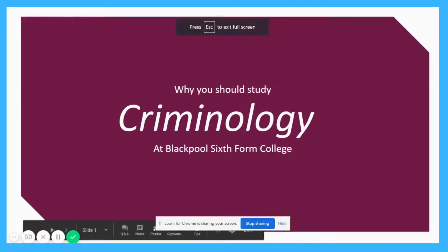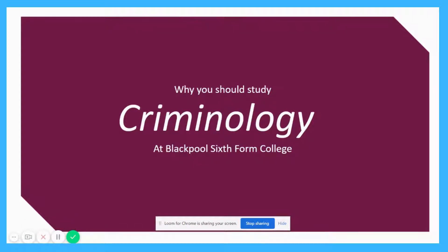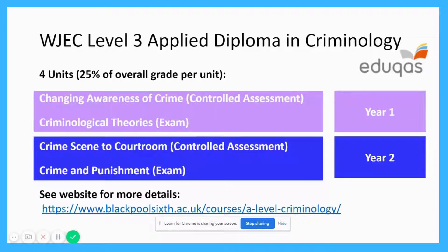Criminology is a new course launching at Blackpool 6th Form this summer. The criminology qualification is not an A level and it's not a BTEC — it's something we call a Level 3 Applied Diploma in Criminology. It has four units in total which are equally weighted towards your final grade. In the first year you'll study Changing Awareness of Crime, assessed by a Controlled Assessment in December.